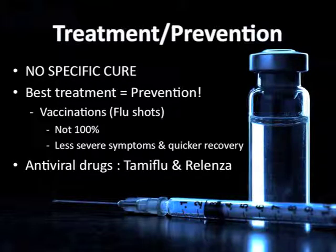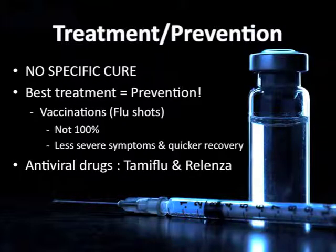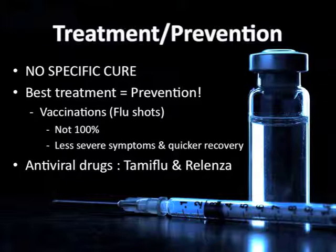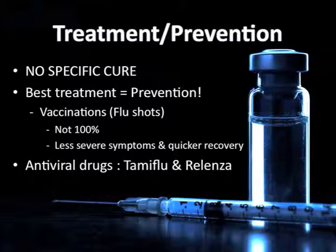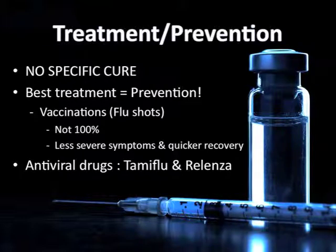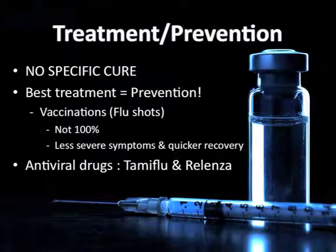How do we treat influenza? Unfortunately, there are no specific cures at this moment. But the best treatment is always prevention. Vaccinations, commonly referred to as flu shots, are the best preventative measures for influenza. The vaccinations are updated annually based on the strain of the flu the CDC predicts will affect the population, so it is important to get the shot every year. The flu shot does not promise 100% prevention from contracting the flu; however, if you do get the flu after getting the shot, the symptoms will be less severe and recovery will be significantly easier and quicker than had you not received the shot.